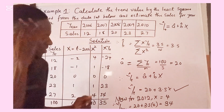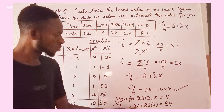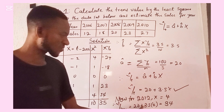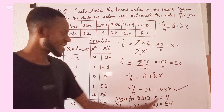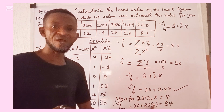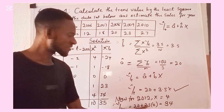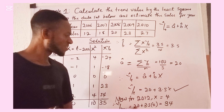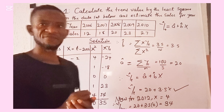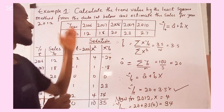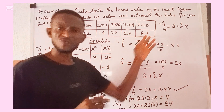So y-cap at 2012 equals 20 plus 3.5 times 4. That gives 3.5 multiplied by 4 equals 14, plus 20, giving 34. So 34 is the estimated sales in 2012. Looking at the data — 12, 18, 20, 23, 27 — we can see increasing sales, which represents an increasing trend: as time increases, the value of sales also increases.